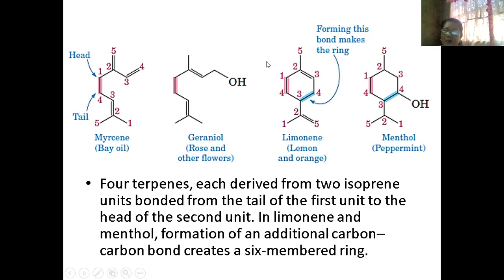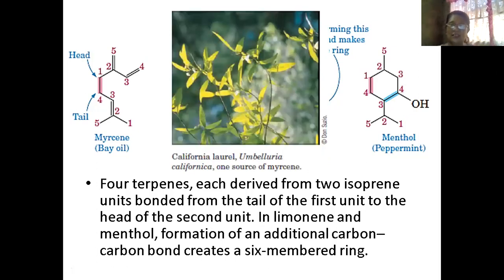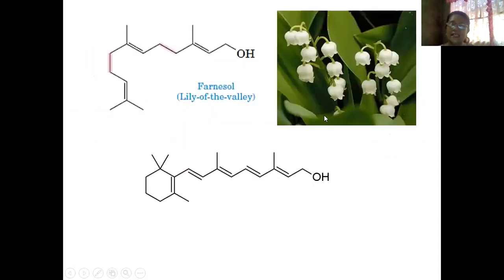Same thing with lemon and orange — they also have two isoprene units. For terpenes, each is derived from two isoprene units bonded from tail of the first unit to the head. Examples include limonene and menthol. The laurel is the source of myrcene bay oil. This is the lily of the valley — it probably has about four isoprene units.